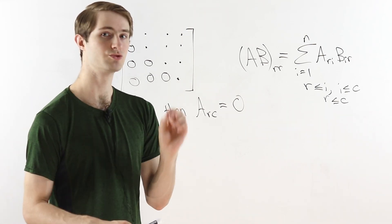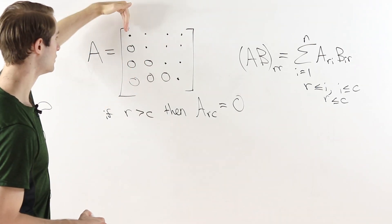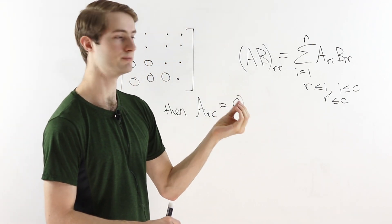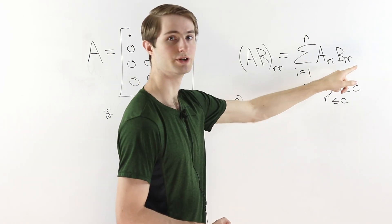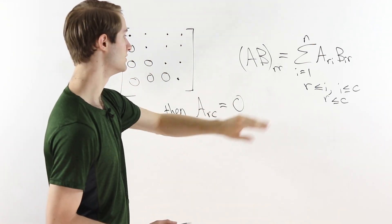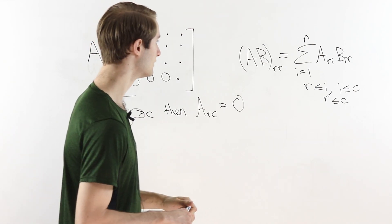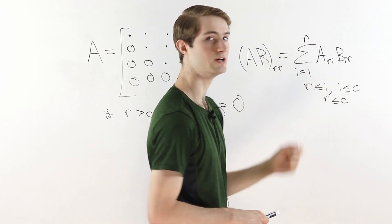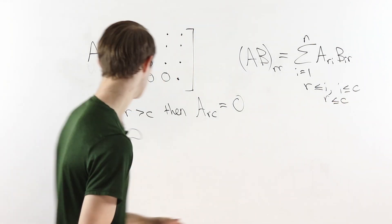Now let's look at the diagonal entries of the matrix product. For diagonal entries, the row and column are at the same index, so we set C equals R. We substitute R for C throughout the formula, giving us the sum from I equals 1 to N of A_(R,I) times B_(I,R). We can apply what we just found about non-zero terms in these sums when A and B are upper triangular.